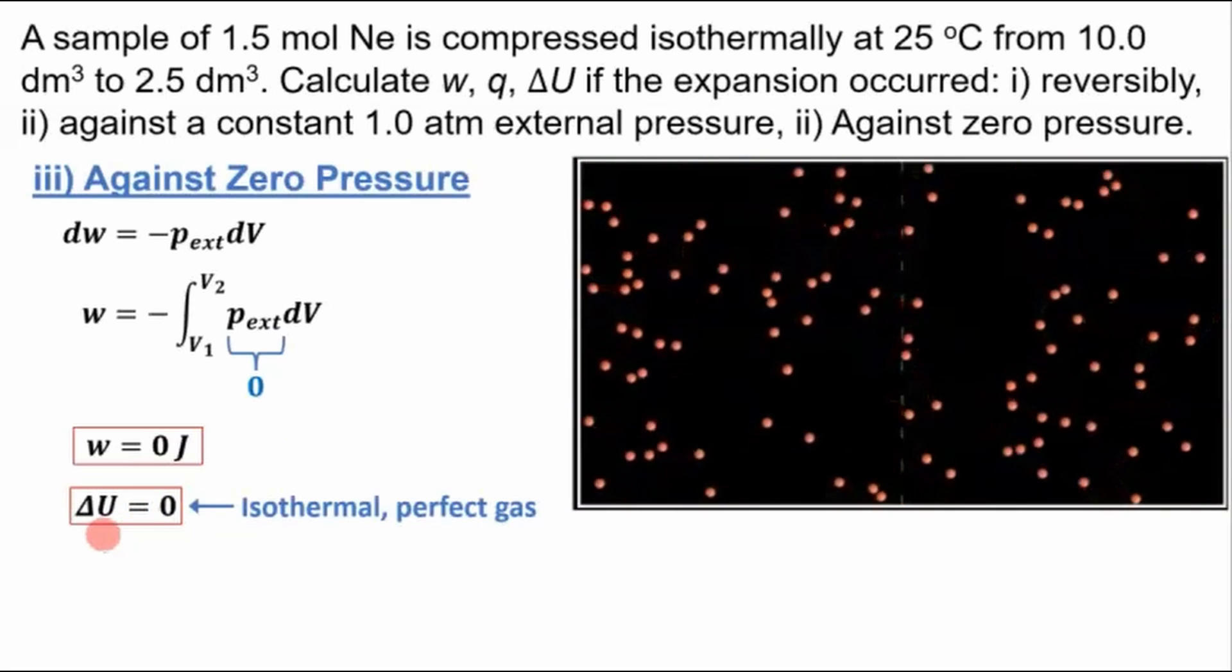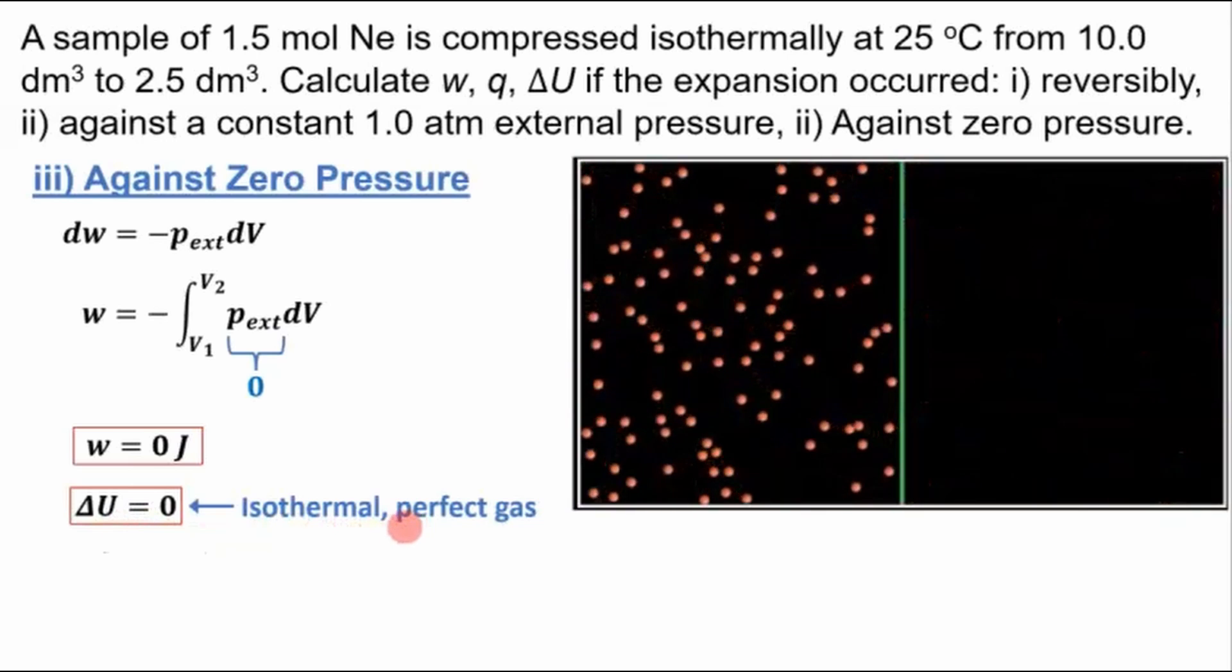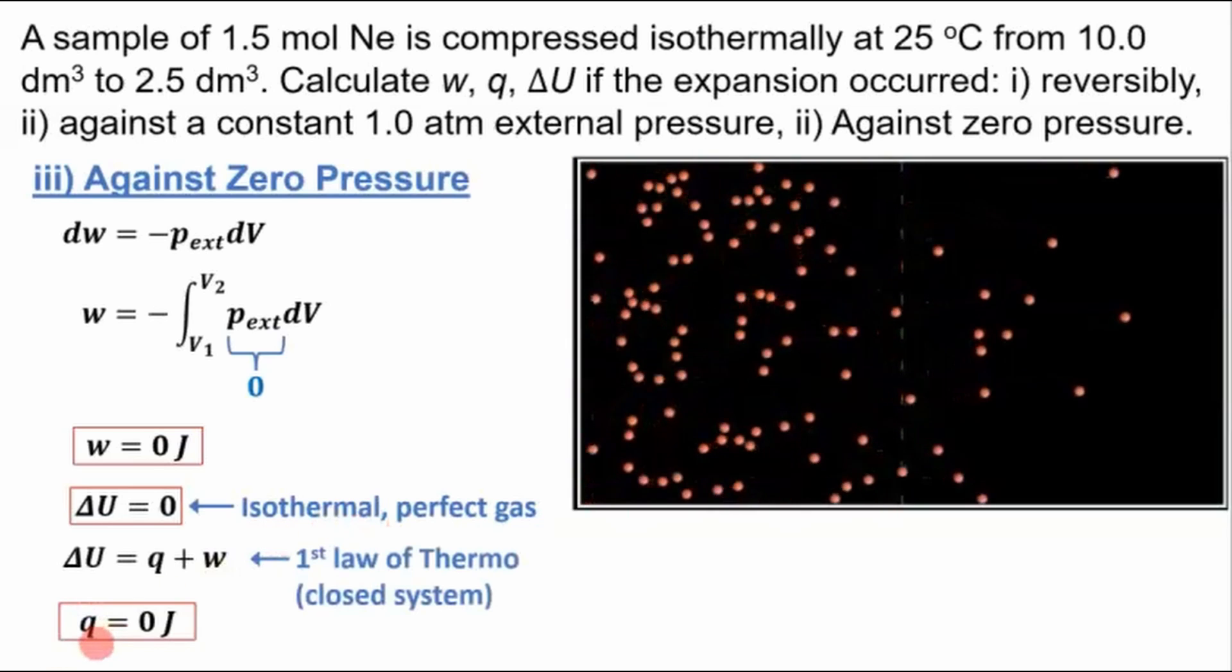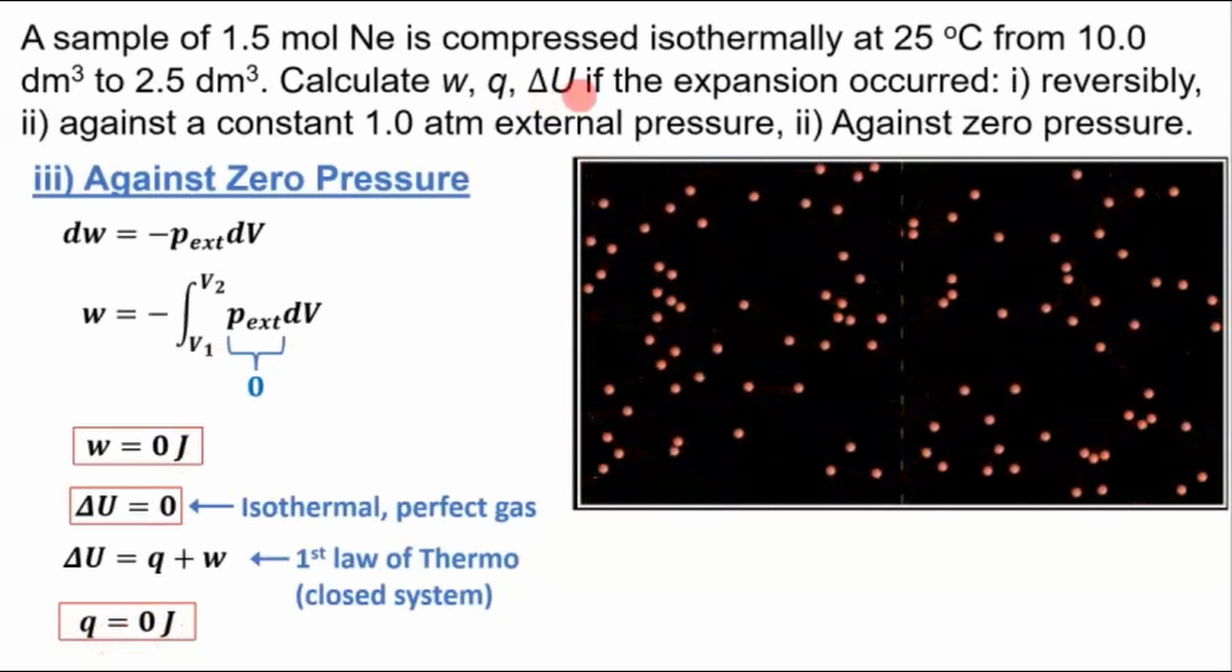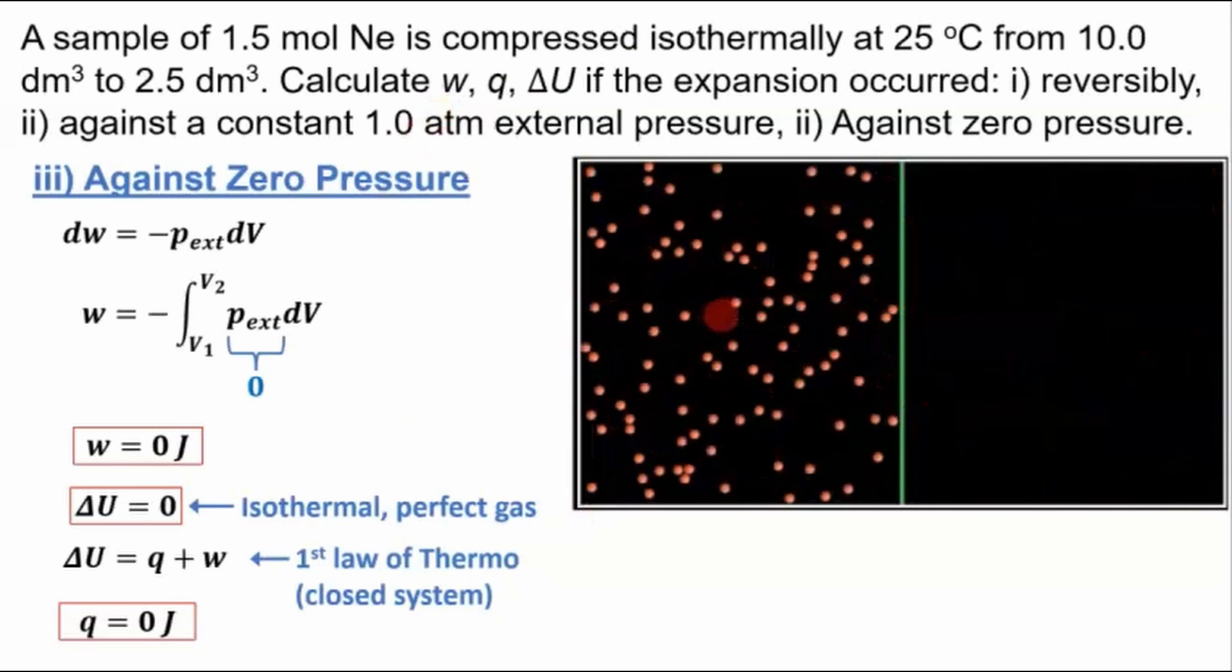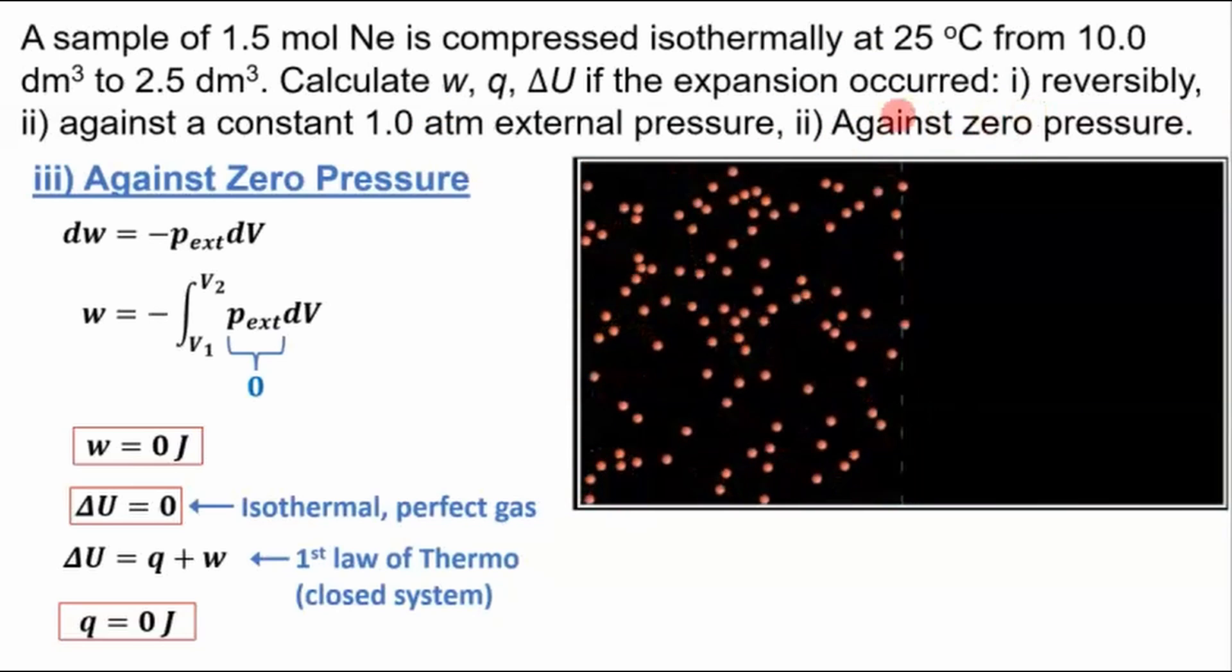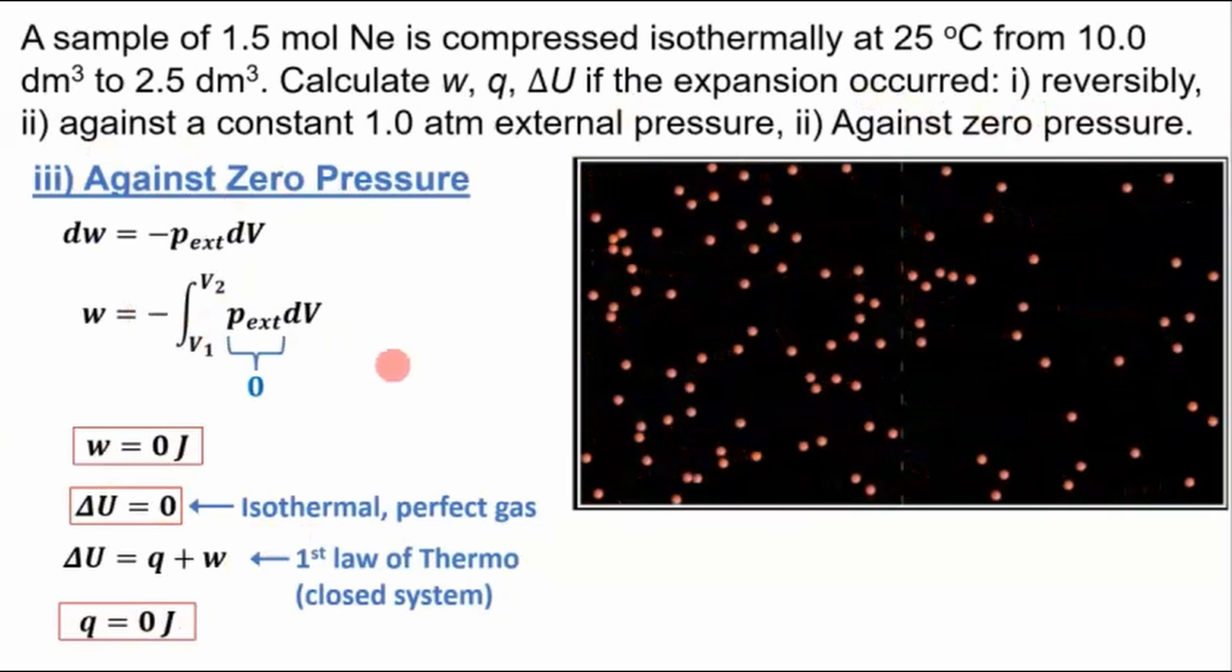We know that the change in internal energy is zero because it's an isothermal process and this is a perfect gas. So using the first law of thermodynamics for a closed system, the heat, the energy transfer as heat, has to be zero joules as well. So zero across the board for this violating the second law of thermodynamics against zero pressure, but you could use the same thing for expansion. The numbers are the same for expansion.